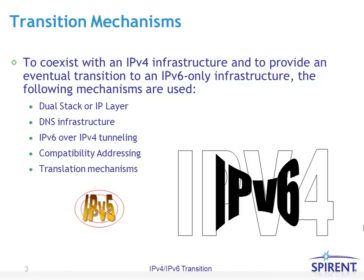In this particular topic, we'll definitely cover the dual stack IP layer, the DNS infrastructure, and we'll start our discussion of IPv6 over IPv4 tunneling. In the second topic, we'll get into more specific examples such as the most current strategy — 6RD and DS Lite — as well as compatibility addressing formats and translational mechanisms.